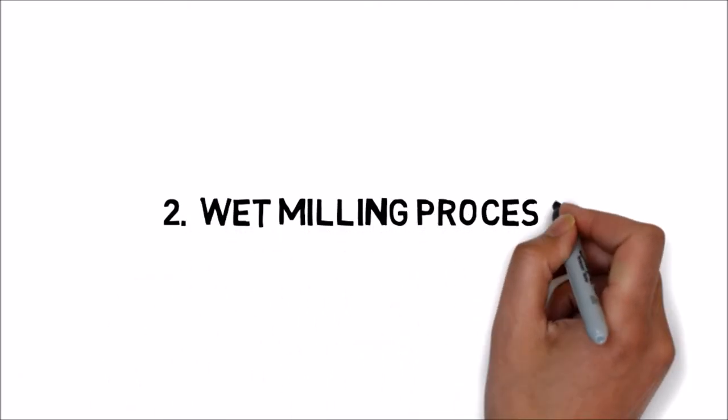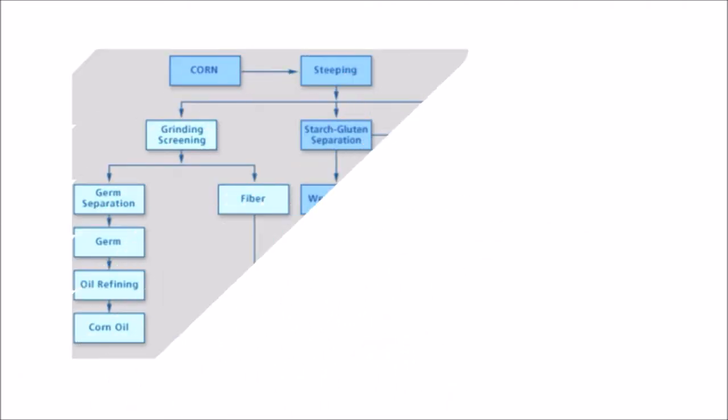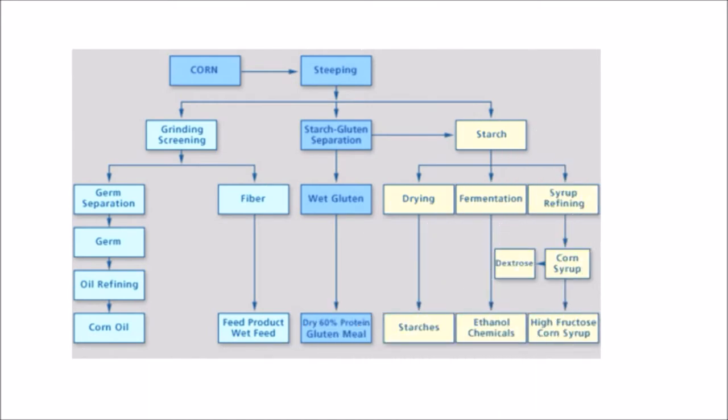Wet Milling Process. In this process, the grain is doused or soaks in H2O and weaken sulfurous corrosive for 24 to 48 hours. This soaking encourages the partition of the grain into its numerous segment parts. In the wake of soaking, the slurry of corn is prepared through a progression of processors to isolate the corn germ.